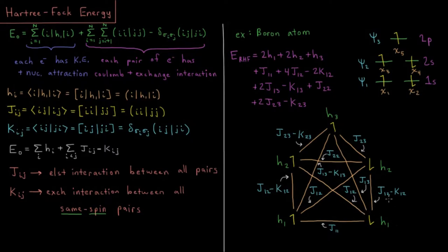Same thing for the spin-down electrons, J12 minus K12. Because it's restricted, both of these numbers are the same because they're both in the same spatial orbital.